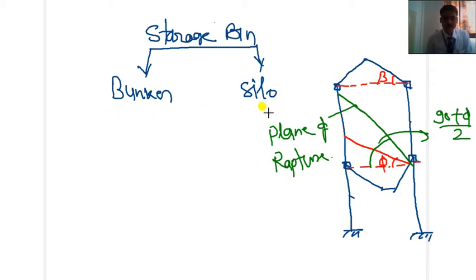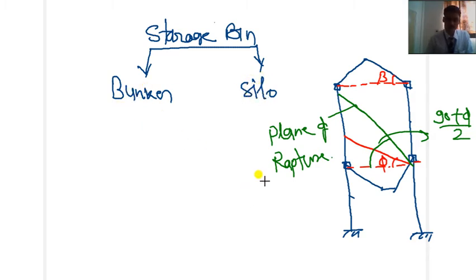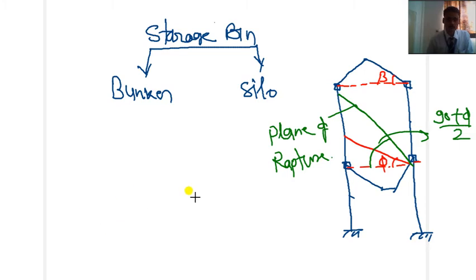If we differentiate bunker and silo by structural behavior: bunker is a shallow type of structure — the depth of bunker is low as compared to silo. Silo is a deep structure — the depth of silo is more as compared to bunker. That is the first parameter for differentiating bunker and silo.